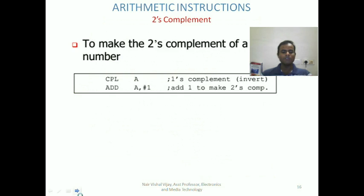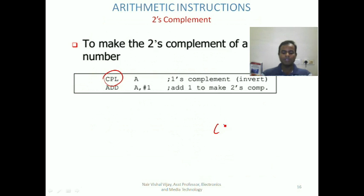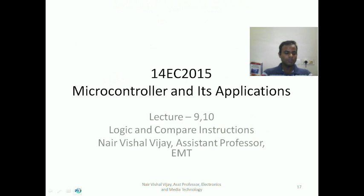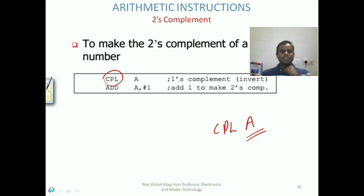To complement a number, we use the CPL instruction. Remember that the two's complement is obtained by taking the one's complement and adding one. The CPL instruction can only complement a number stored in the accumulator — the accumulator is the only register for which a complement can be found. That covers arithmetic operations; we will see logic operations and jump and loop operations in the coming lectures. Thank you.